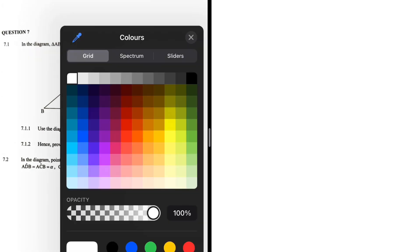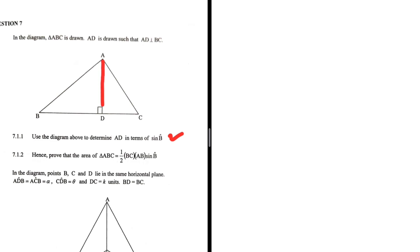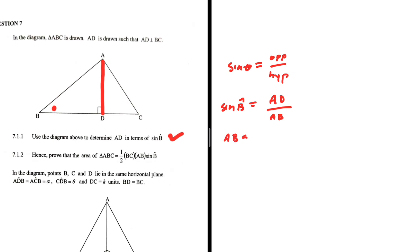Question 7.1.1 asks us to determine AD in terms of sine of angle B. Sine of theta equals opposite over hypotenuse. In this case, sine of angle B equals AD divided by the hypotenuse AB. Cross-multiplying, we get AD equals AB·sin(B).